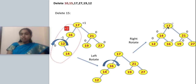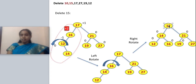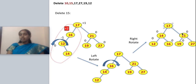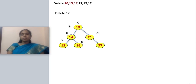Next, I want to delete 17. Node 17 has two children. To delete a node with two children, I replace it with either the maximum of the left subtree or the minimum of the right subtree. I choose the minimum of the right subtree, which is 19 — the leftmost node. So I place 19 where 17 was.